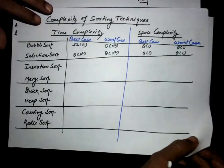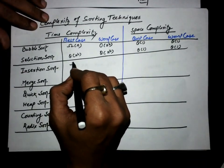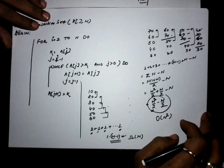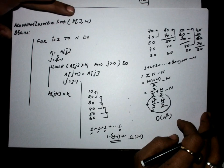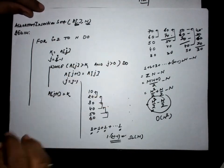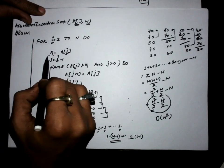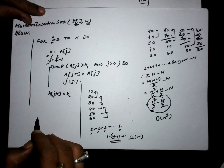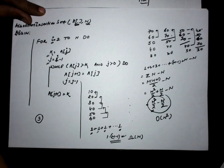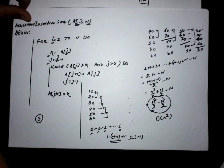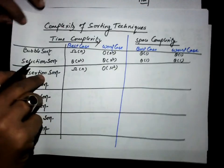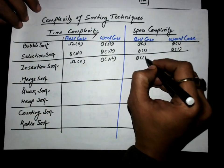For space complexity, the array a and n were given. From our side, we took extra variables I, K, and J — a total of 3 extra variables. No matter how large the array is, only 3 variables are required. Since 3 is a constant value, the space complexity of the insertion sort algorithm is Θ(1).